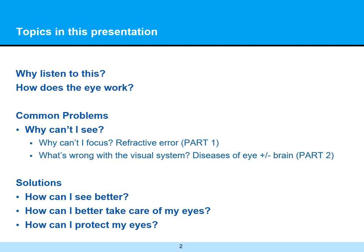In order to know how to protect them, we also need to understand how they work. This video presentation is really split into a couple of different parts. The first part helps us understand when you can't focus or things are blurry, why that is. The second part will be talking about different diseases of the eye and perhaps the brain — what might be wrong with the visual system — and will be reserved for a second part of this presentation.